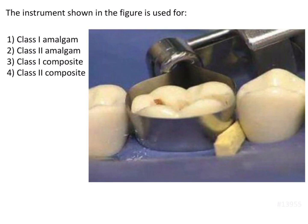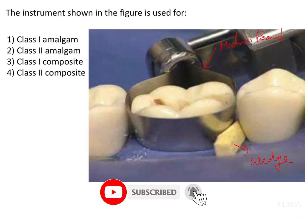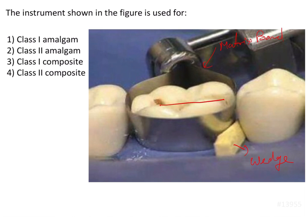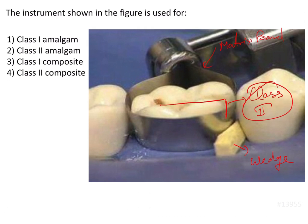The instrument shown in the figure is a matrix band and wedge arrangement. This is the matrix band and here is the wedge. This whole arrangement is used for restoring the missing wall. This is the occlusal aspect and this is the proximal aspect, which is why this is the Class 2 restoration or Class 2 preparation, where we are going to do the Class 2 amalgam restoration.